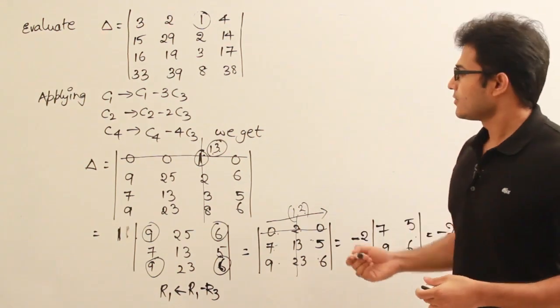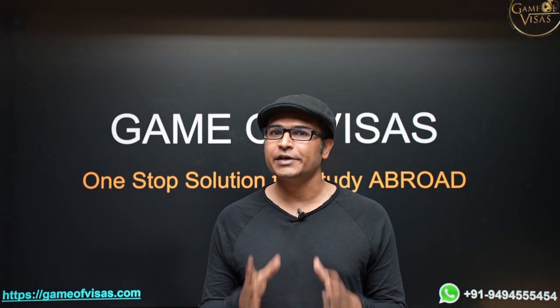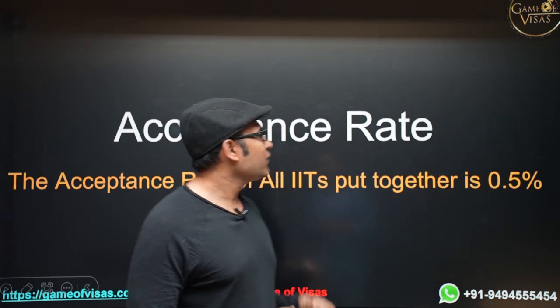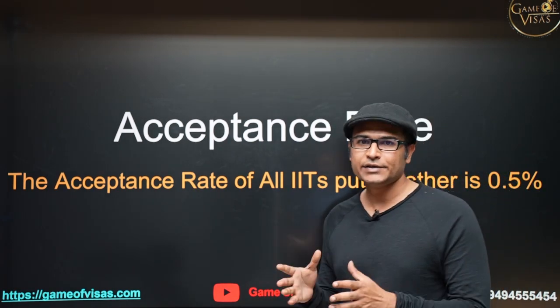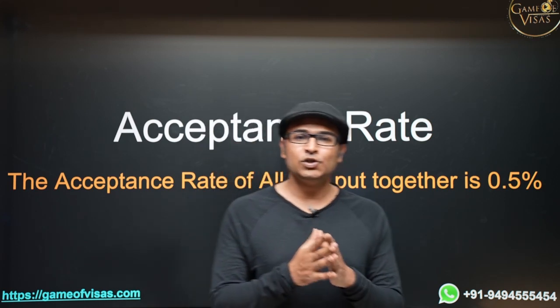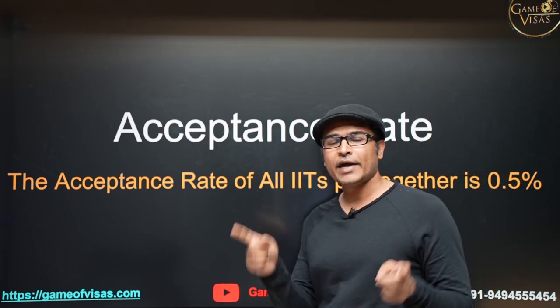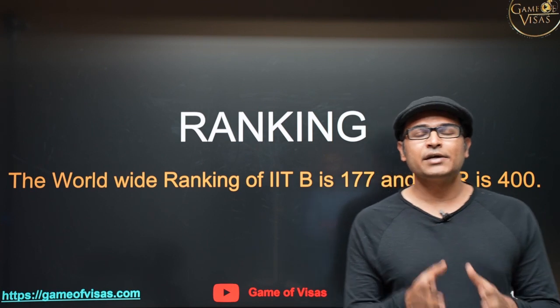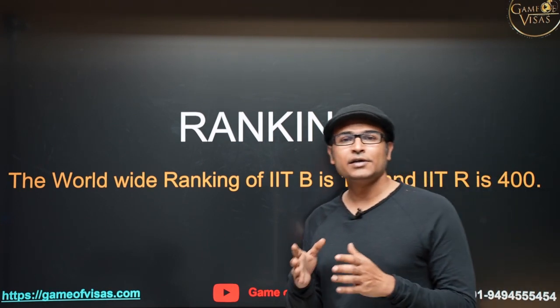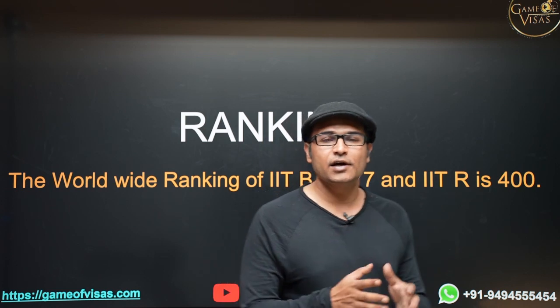If you are planning to do masters, then doing masters abroad is better than doing masters in India. Out of one lakh students who take GATE every year, there are only 500 seats in old IITs. All the IITs put together have an acceptance rate of 0.5%. Universities better than IITs have very good acceptance rates, like 30% or 40%. IIT Bombay's ranking is 177 and IIT Roorkee's ranking is 400. Getting into a university better than IIT Roorkee is easier compared to getting into IIT Roorkee.